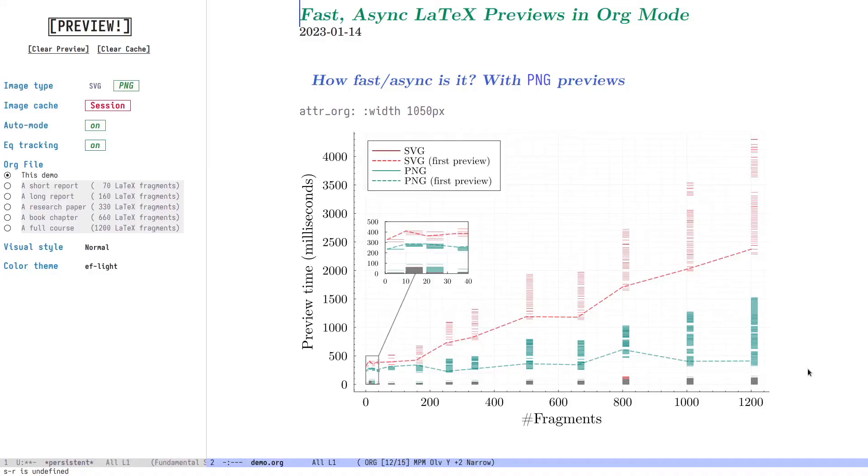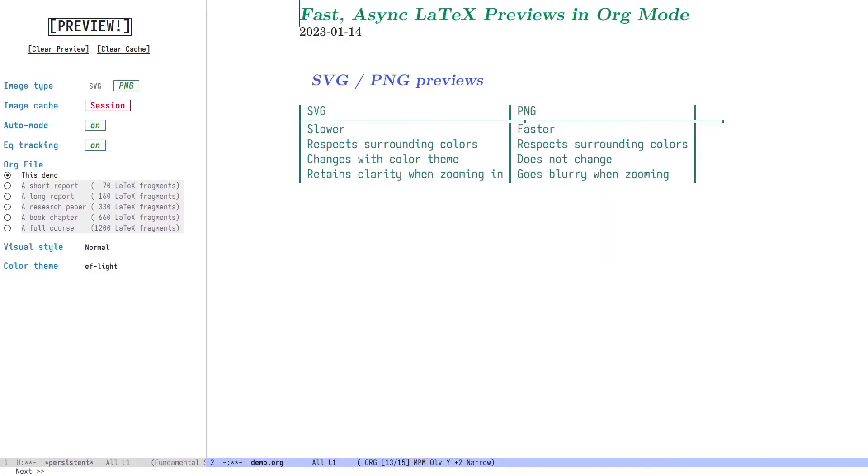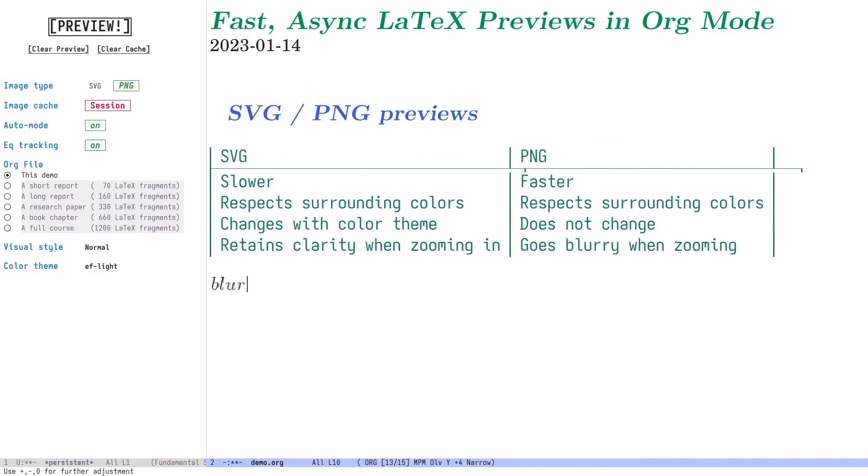If, like me, you're sensitive to latency, you could choose to use this processing method instead. The downside to using PNGs is that you'll have to regenerate previews when you switch color themes. Although they do respect the colors of the active theme at the time of preview generation. The other issue is that they don't scale well. So that zooming into text will make PNG previews appear blurry. As you'd expect.